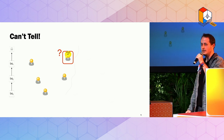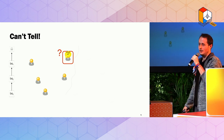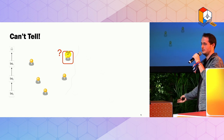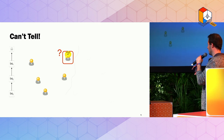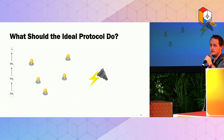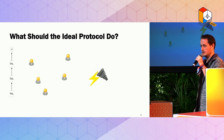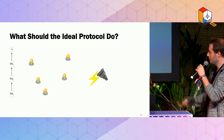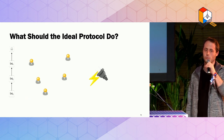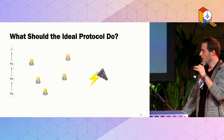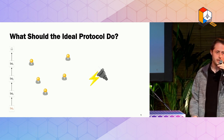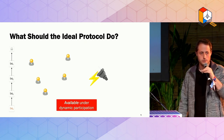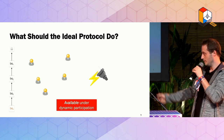The problem is, us here in Amsterdam cannot tell these two situations apart. All we see is that suddenly we cannot talk to half of the network. And the question is, what should the ideal protocol do in this circumstance? If the reason for not seeing half of the world is in fact a power outage, then we would want the ideal protocol to keep going and produce more blocks. This is a property which we call availability under dynamic participation.